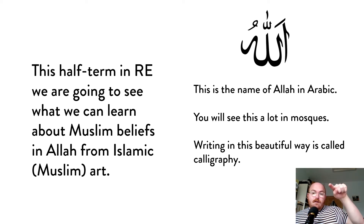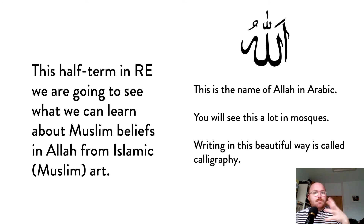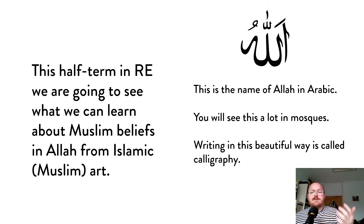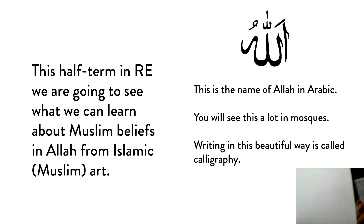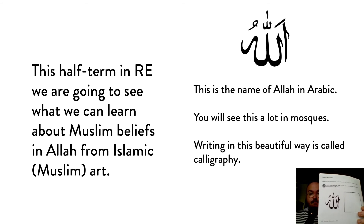That squiggly symbol I showed you in Arabic is actually incredibly important to Muslims because this is how they write the name Allah in Arabic — in the special Arabic used in mosques, which are Muslim places of worship. You can see it's got a pattern you can follow. This is called calligraphy — a really beautiful way of writing out words. When they write the word Allah, they're not just writing it quickly; they are taking time to make sure it is beautifully and perfectly written.